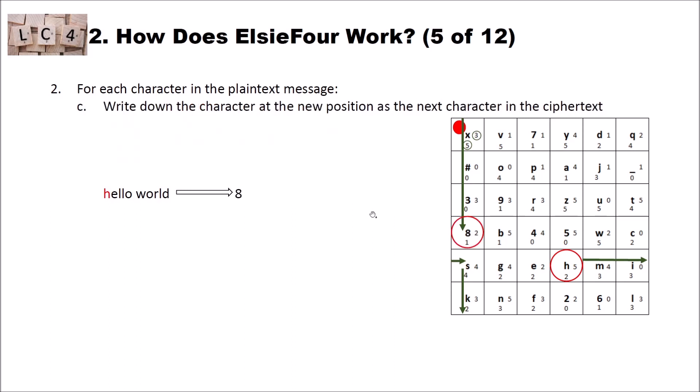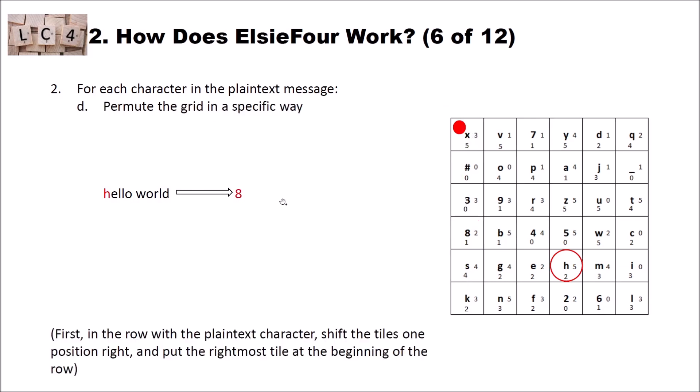Then we write down the character at the new position as a new character in the ciphertext. So we write down 8. This is our ciphertext letter. And now we have to permute our grid here. We permute the grid in a specific way. First, in the row with the plaintext character, here in our case h, shift the tiles one position right and put the rightmost tile at the beginning of the row. So we will shift this row here to the right and then the i goes back into the row here. One shift to the right and the i went to this position.